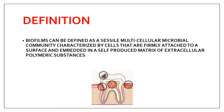So the biofilm definition has three important points. First, it is a microbial community. Second, the microorganisms are attached to the surface. Third, and most importantly, this community of microorganisms is embedded in a self-produced matrix of extracellular polymeric substances - that is the third and most important part of the biofilm definition.